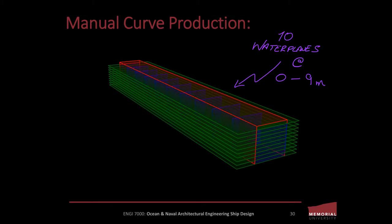Set your first waterplane at the keel and create a number of waterplanes. They don't have to be equally spaced, and it may make sense to have smaller spans in regions of high curvature or larger spans in a wall-sided region, but don't overcomplicate things if you don't have to. Here I've created 11 waterplanes spanning from the keel to the bulkhead deck of the barge.